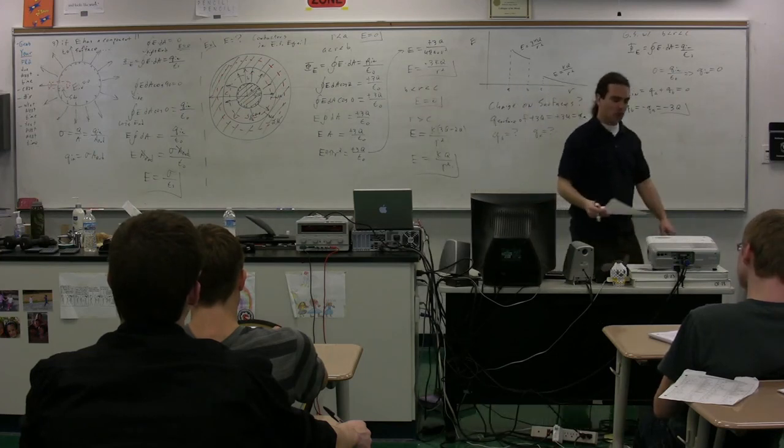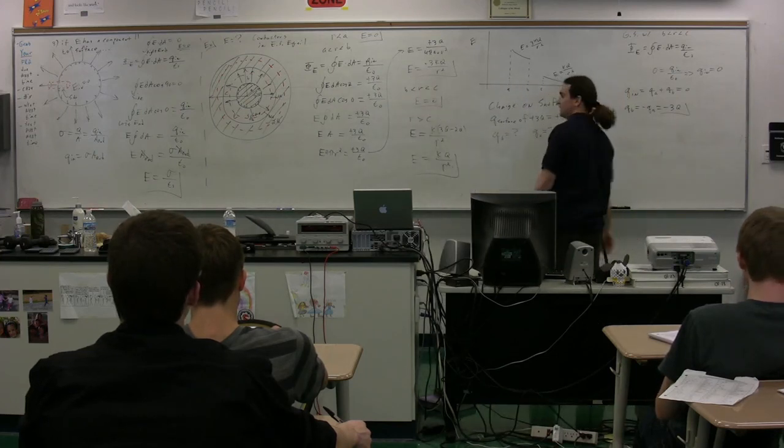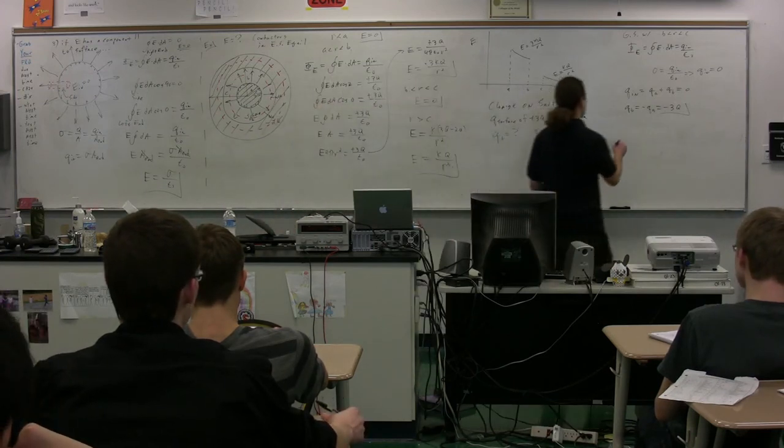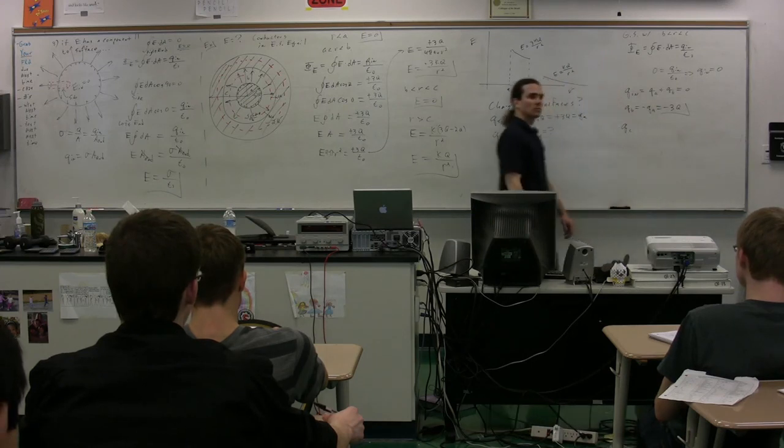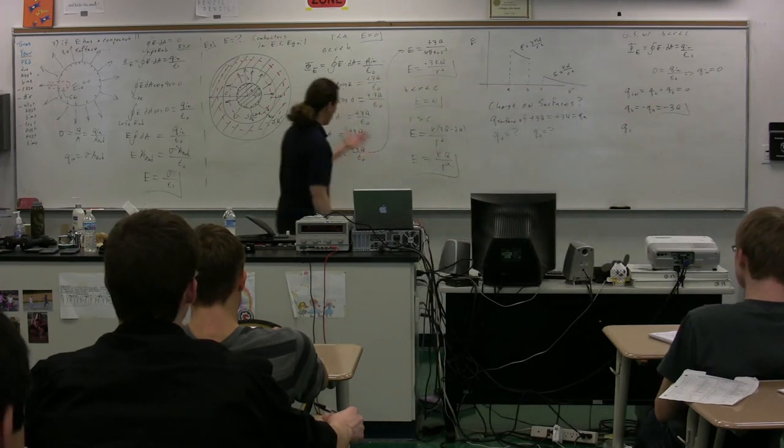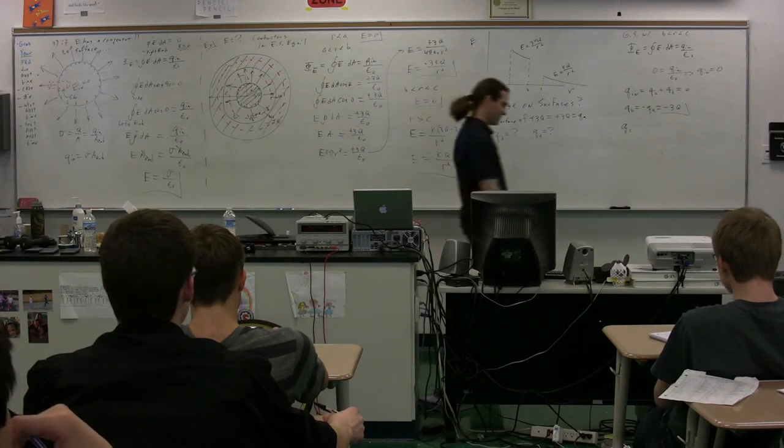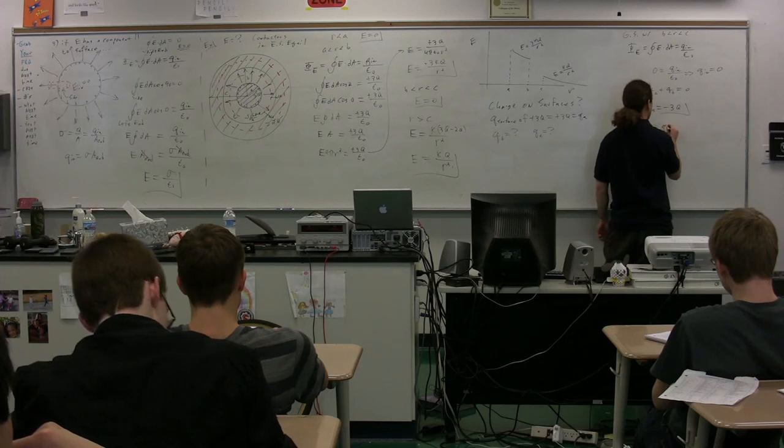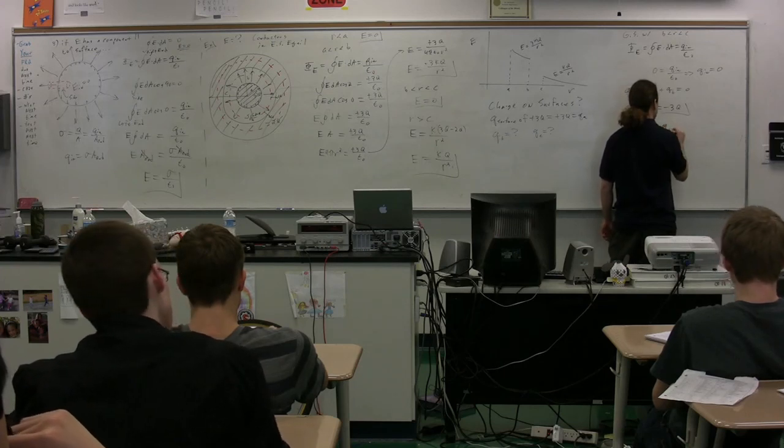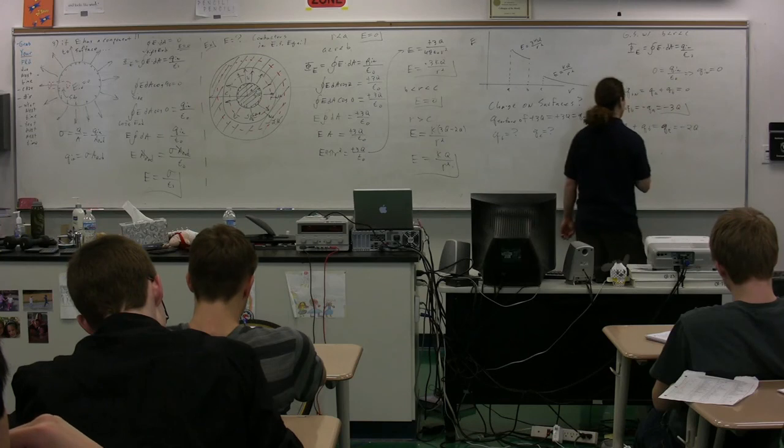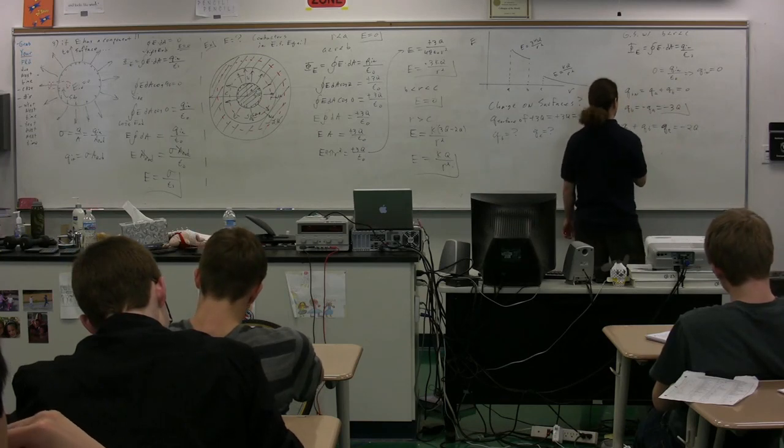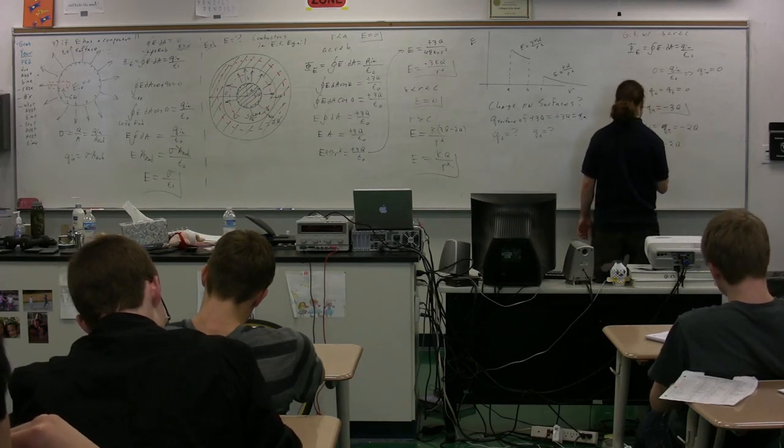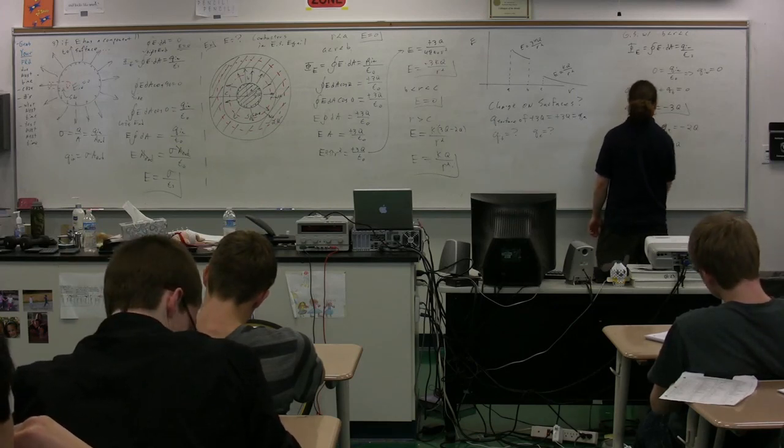Well, then, what is the charge at c? Plus 1q. How do you get that? Because the total is negative 2q. Q at c plus q at b has equal the charge total, which is equal to negative 2q. Therefore, you get q at c minus 3q is equal to negative 2q. Therefore, q at c is equal to positive q.